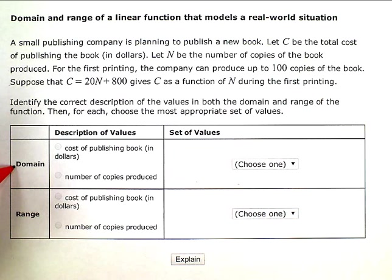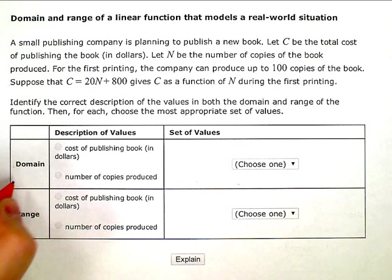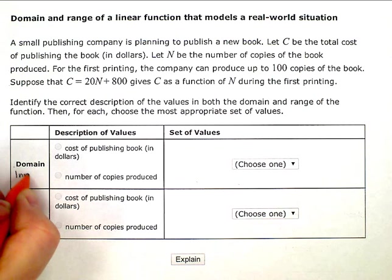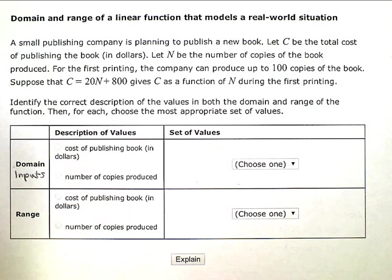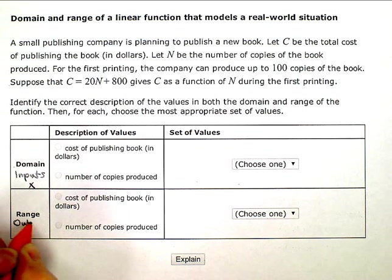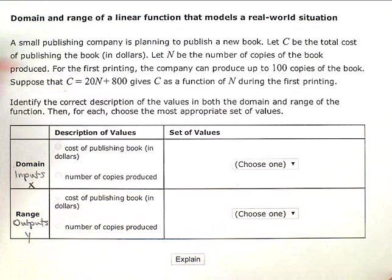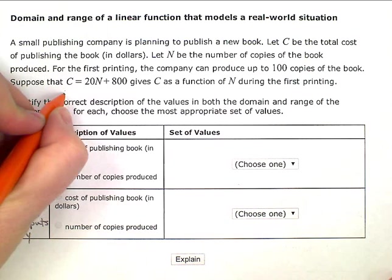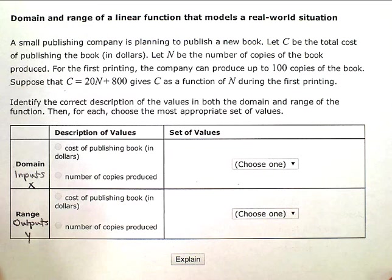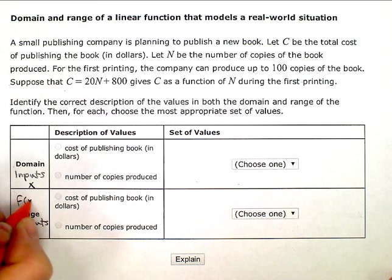Okay, so my domain are my inputs or X values. My range are my outputs or the Y values. And I could rewrite this equation with X's and Y's if I just wrote Y here, right? Or I'm going to actually even use function notation, F of X.